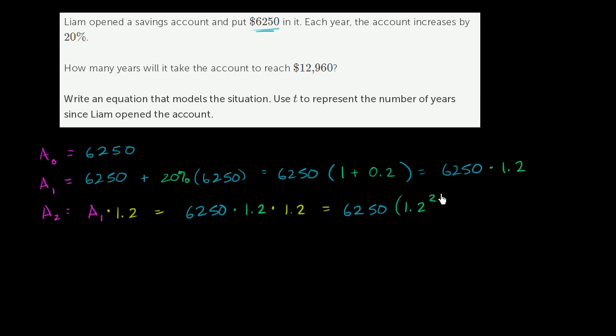And I think you might see where this is going. What about after three years? After three years, well, we're going to multiply by 1.2 once again. So then he's going to have 6,250 times 1.2 to the third power. And so after t years, well, we're going to multiply by 1.2 that many times. So after t years, in his account, he's going to have 6,250 times 1.2 to the t-th power.